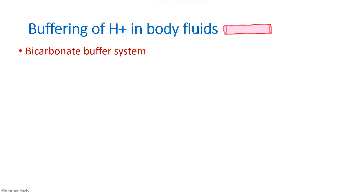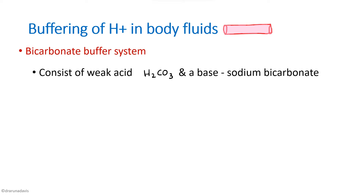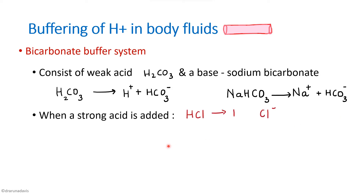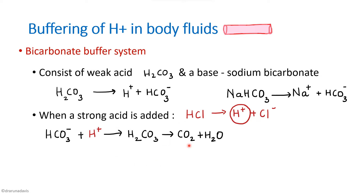The bicarbonate buffer system mainly consists of two compounds: a weak acid, carbonic acid (H2CO3), and a base, sodium bicarbonate. Carbonic acid is produced when water combines with carbon dioxide in the presence of the enzyme carbonic anhydrase. Sodium bicarbonate is found in extracellular fluid. H2CO3 is a weak acid, partly dissociated to form H+ and bicarbonate. When a strong acid like HCl is added, it dissociates to H+ and Cl-, and the bicarbonate combines with that H+ to form H2CO3, which in turn forms carbon dioxide and water.